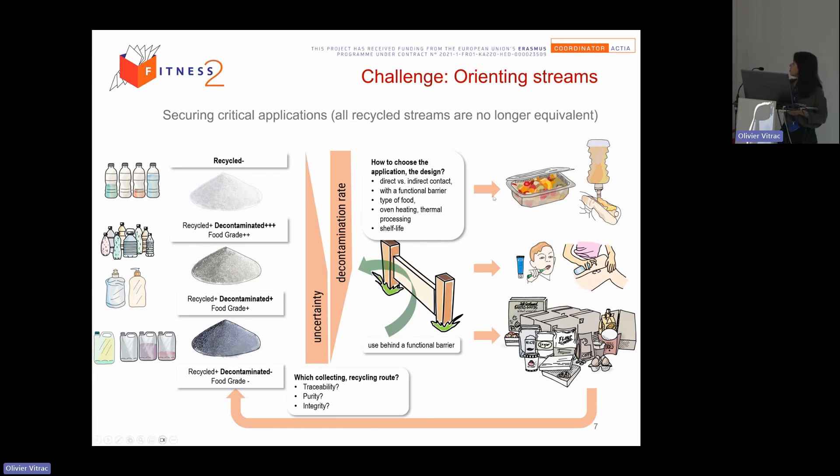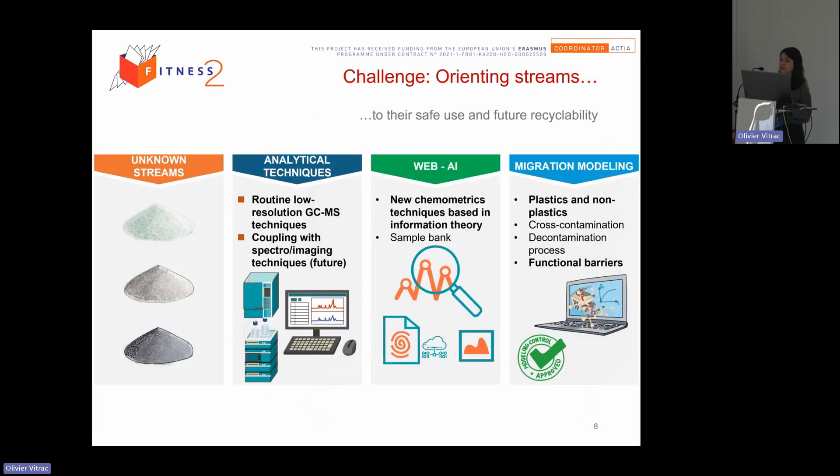And we have the big challenge of how we can orient the stream or the material flows for the good applications to ensure the safety. So this one is good for food contacts, for cosmetic contacts. We can add some functional barriers. It depends on the type of food, the process, the shelf life, indirect or direct contact. So all of this, we need to have many questions. So here we propose one methodology combining analytical techniques, just the routine one, low resolution GC-MS, not something really high tech, coupling with information theory to treat the chromatogram data.